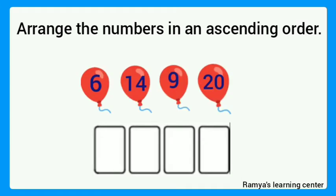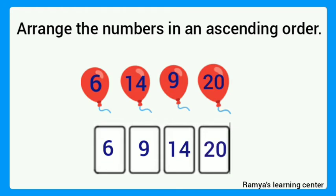Next one. The given numbers are 6, 14, 9, and 20. Arrange these numbers in an ascending order — smallest to biggest. The smallest number is 6, then the next number is 9, then 14, and the biggest number is 20. The numbers are 6, 9, 14, and 20.